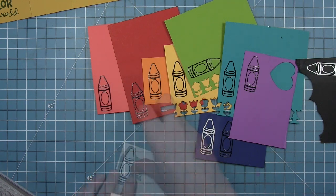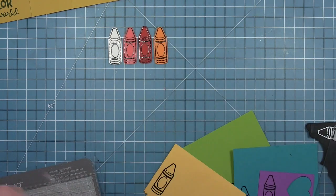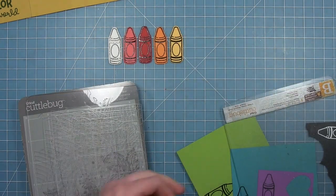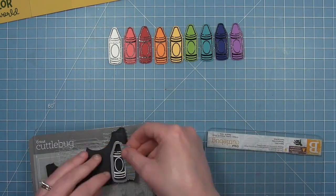So I'm going to fit 10 crayons in here. So I picked out my 10 colors before I started. Now I'm going to use the die that matches the little crayon, and I'm going to cut all of these out.